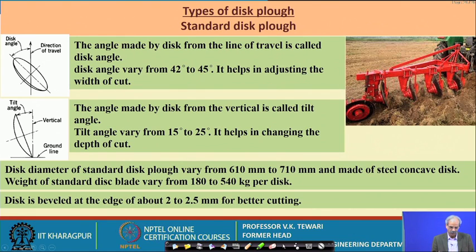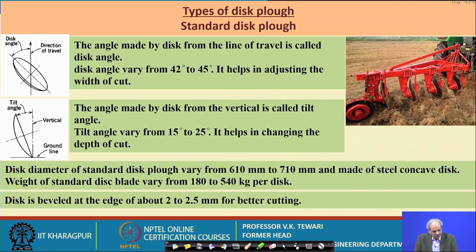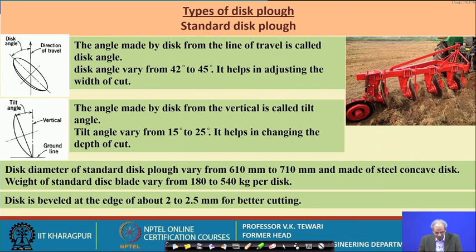Regarding types of discs, the disc angle and tilt angle are important with respect to the line of motion. The tilt angle varies from 15 to 25 degrees, and the disc angle varies from 42 to 45 degrees. The disc angle helps in adjusting the width of cut and the tilt angle adjusts the depth of cut. Discs are made of steel, ranging from 610 to 710 mm in diameter, with a bevel or chamfer of 2 to 2.5 mm for better cutting.